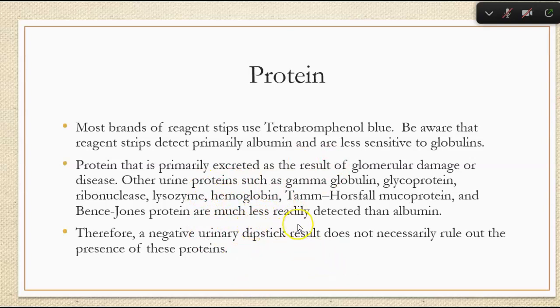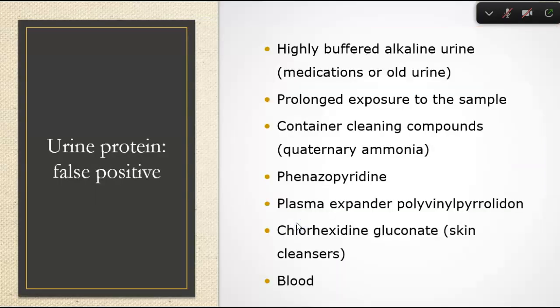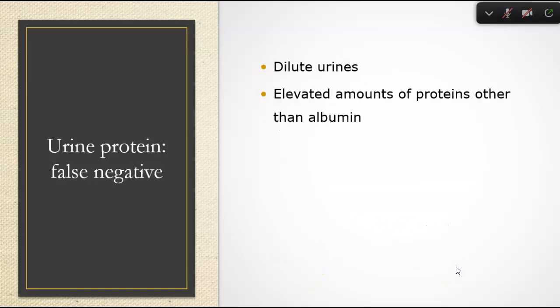A negative urinary dipstick doesn't necessarily rule out the presence of all other proteins — we have other tests that help detect those. False positives can occur in highly buffered alkaline urine, with prolonged exposure to the sample, containers cleaned with compounds like ammonia, other drugs, plasma expanders, blood, or skin cleansers like chlorhexidine gluconate. False negatives occur with extremely dilute urine or protein present that's not albumin.